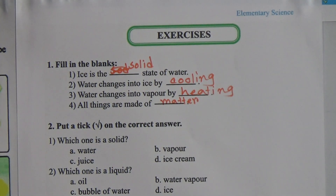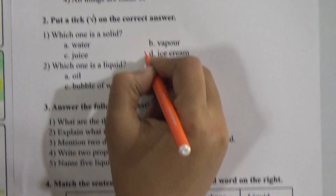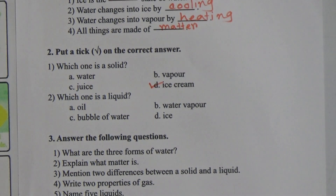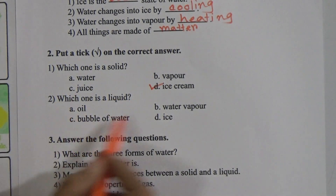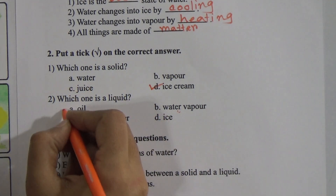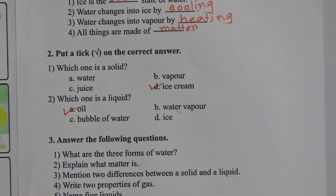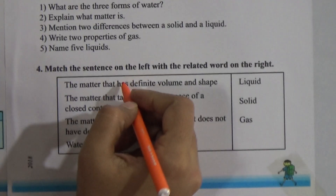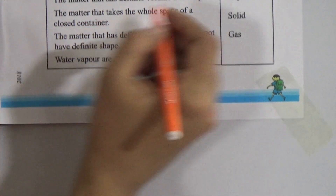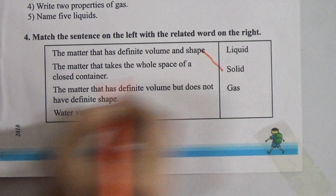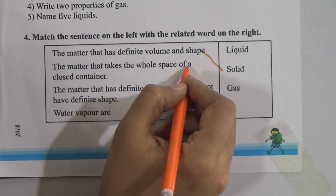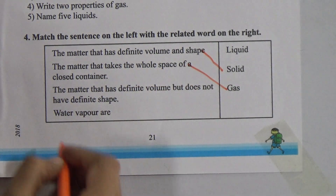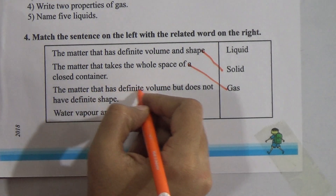Now choose the correct answer. First question: Which one is solid — water vapor, juice, or ice cream? The answer is ice cream. Second question: Which one is a liquid — oil, water vapor, bubble of water, or ice? The answer is oil. Now for the matching: Matter that has definite volume and shape is solid. Matter that takes the whole space of a closed container is gas.